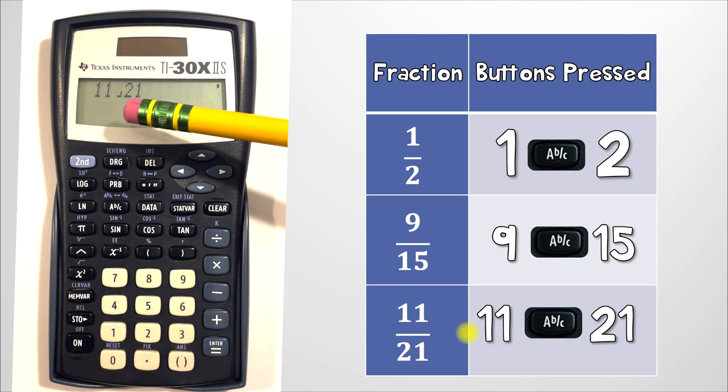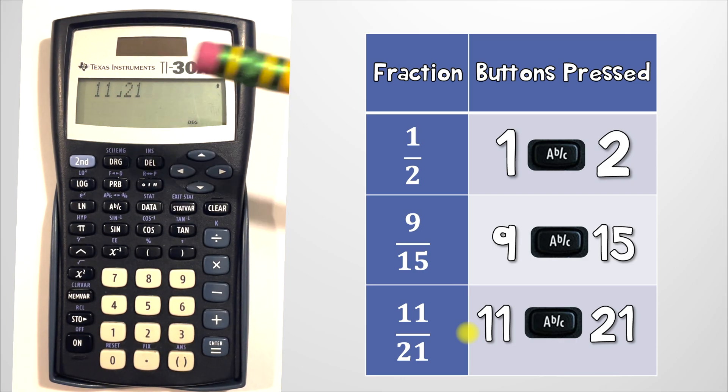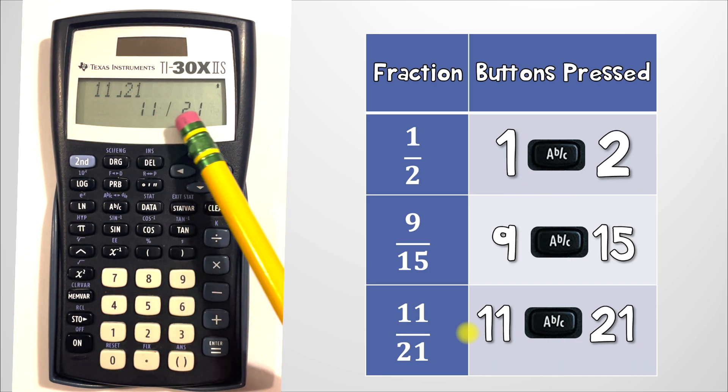So in the calculator you'll see 11 bracket 21 but that's just how the calculator writes 11 over 21.